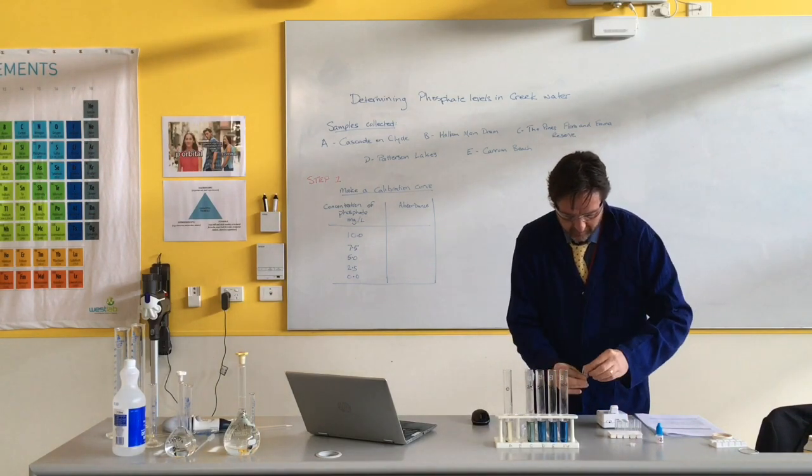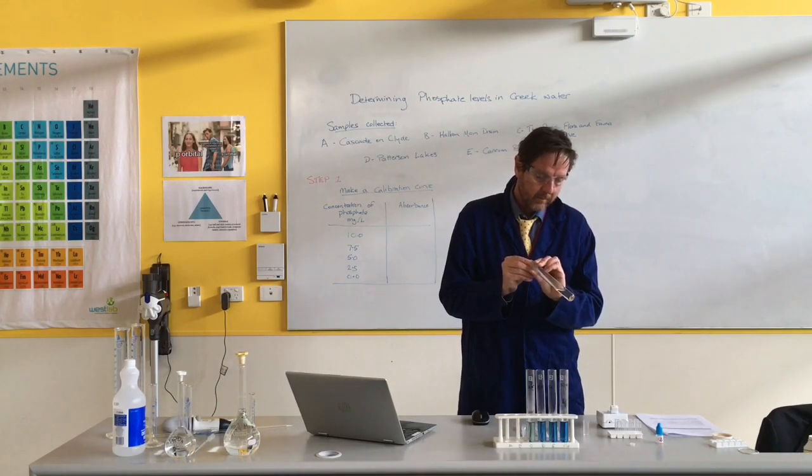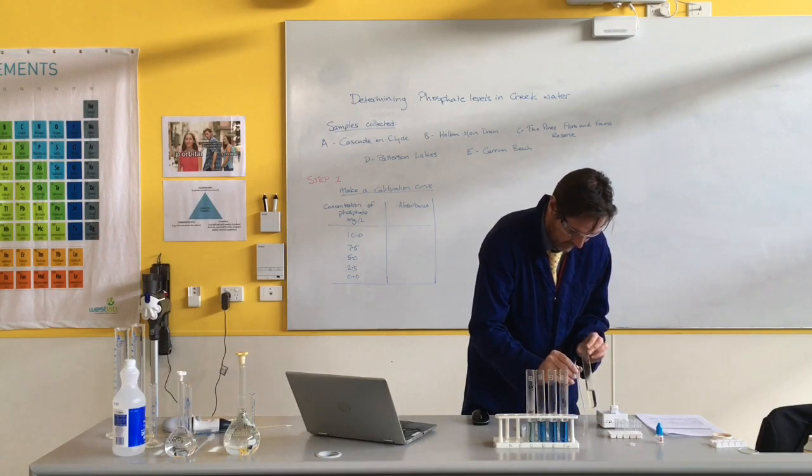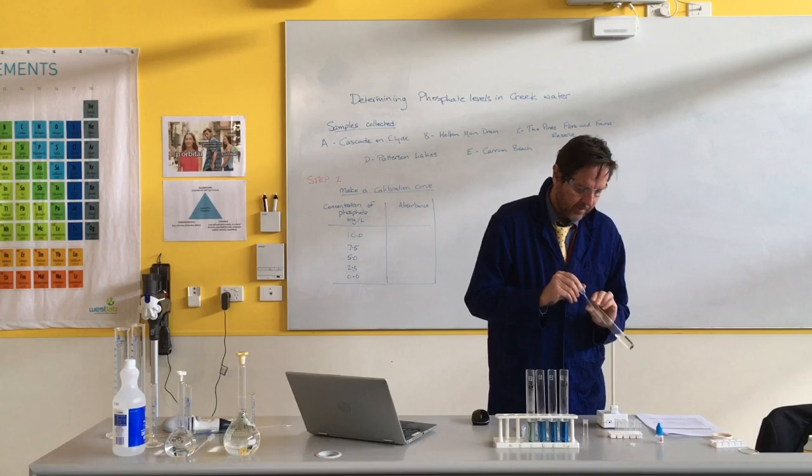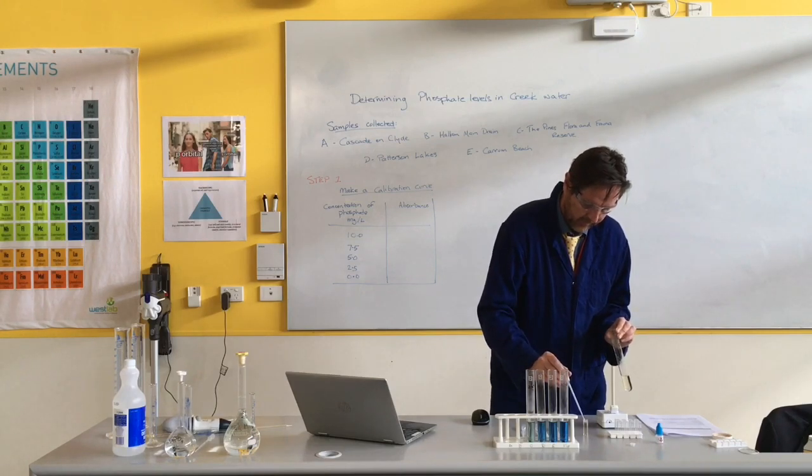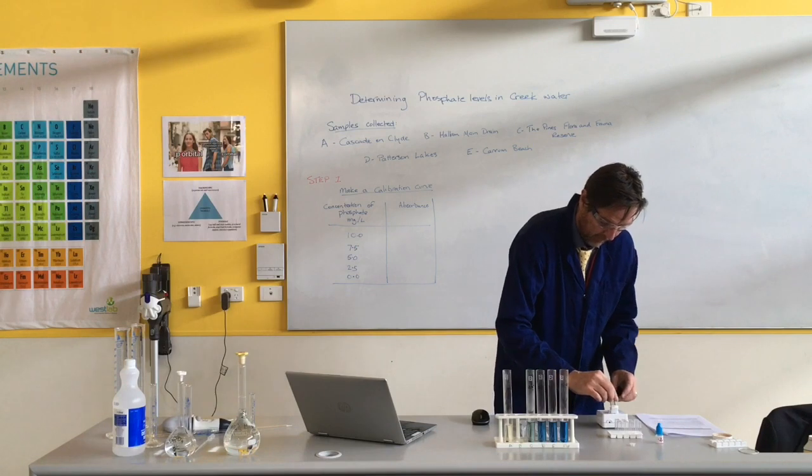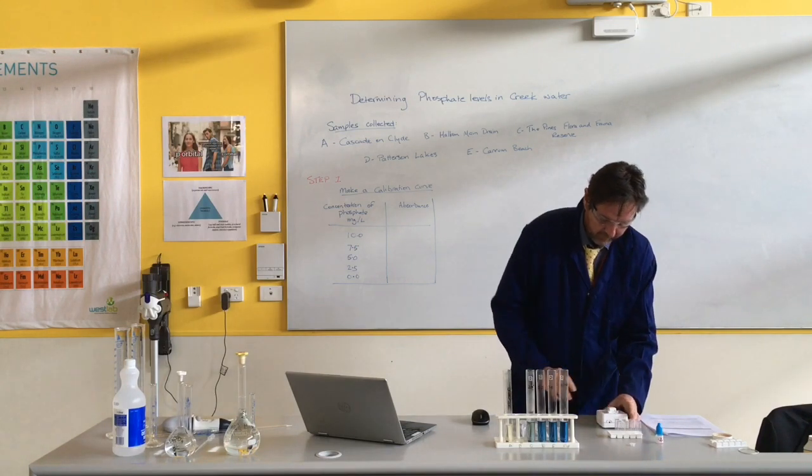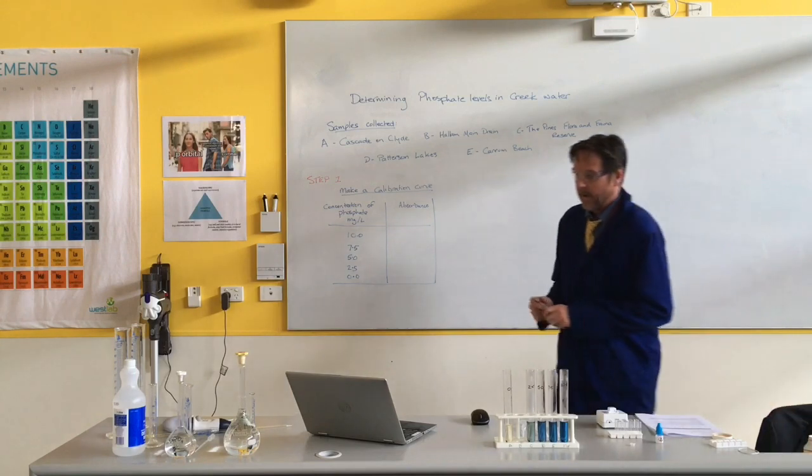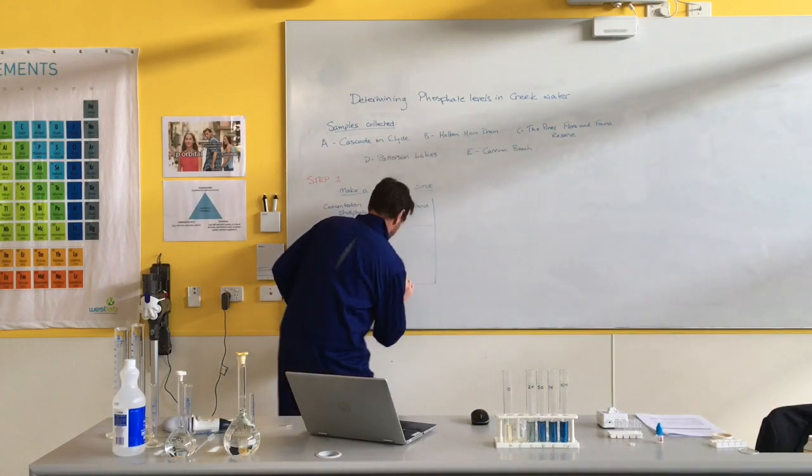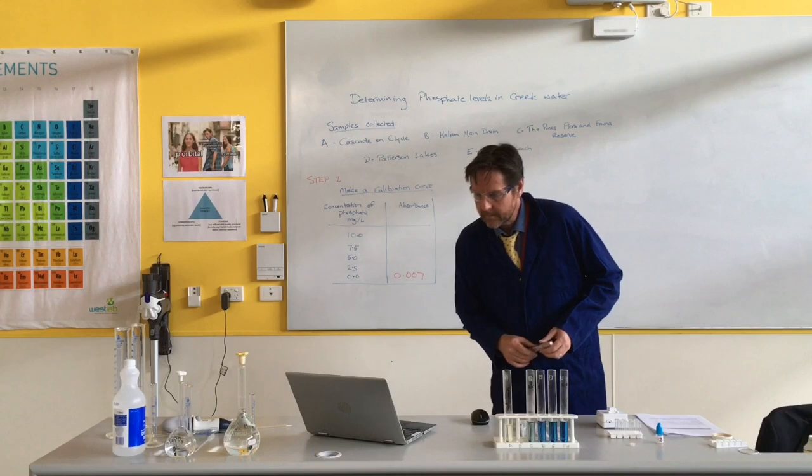So we normally start off with the one which is the lowest concentration. So in this case, it's the zero. So I'll try and fill that up as best I can. Maybe another squirt. That's probably enough, but why not a little bit more? So if I put this in here, let's see what our colourimeter says. Pop it in. Put the lid on. Press start. And we are getting a number that I'll write down on the board for you. And the number, the absorbance we're getting here is 0.007.